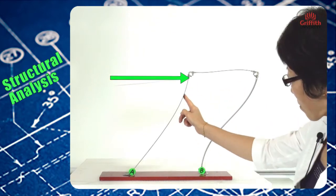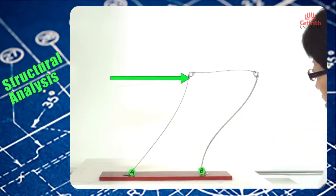But for the first column here, because this is one curvature, there are no contraflexor points there.